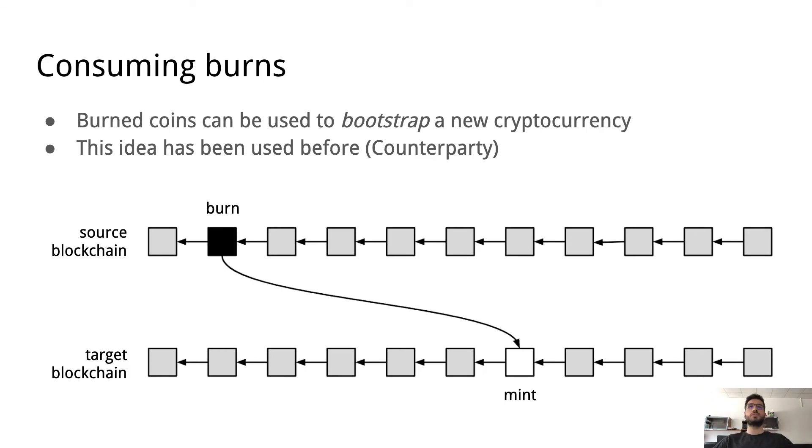An interesting use case for this is to actually bootstrap a new cryptocurrency. If we have an existing cryptocurrency, then we can basically burn coins there in order to mint them on the new cryptocurrency. Here we have a pictorial representation of this, where on the top we have the existing cryptocurrency, and burn happens on that block that is marked as black. Then on some other block on the new cryptocurrency, which blockchain is shown below, we basically reference this burn in order to mint new coins. Then we can have a rule that says coins can only be minted if a corresponding burn has been made on the existing blockchain.